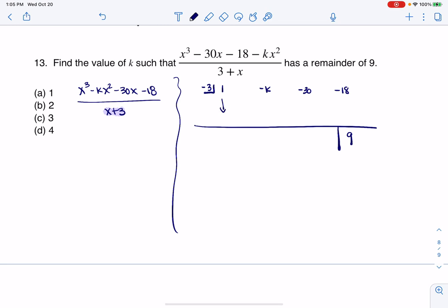So let's do this. So if I bring the 1 down, great, negative 3 times 1 is negative 3. This would then be negative k minus 3, whatever that is.